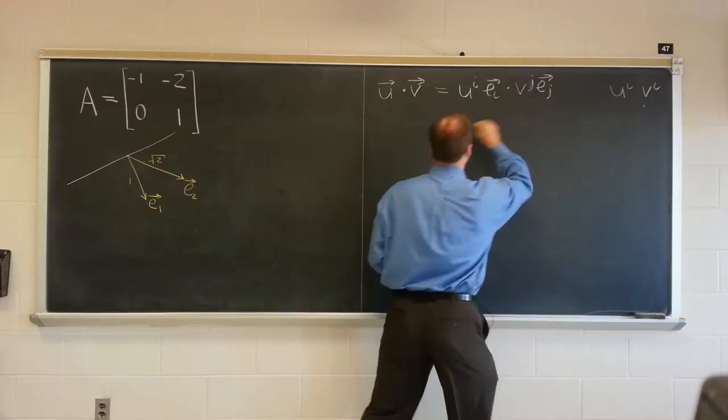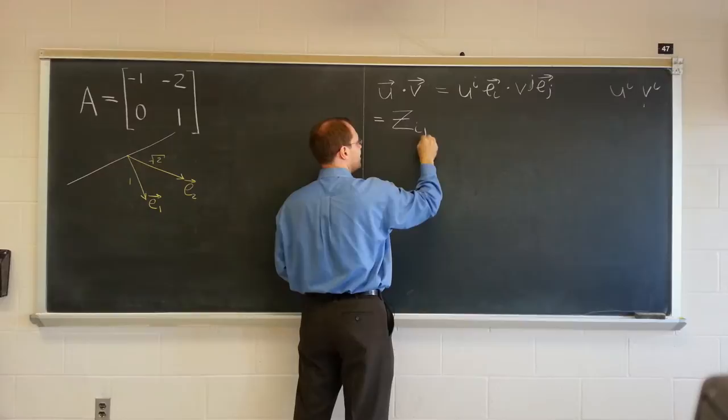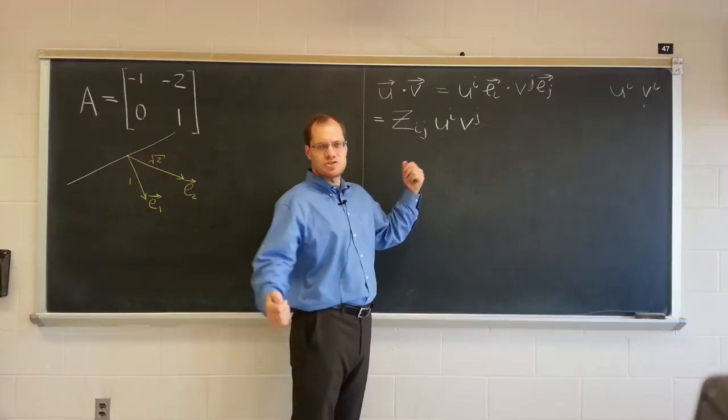Which of course equals, continuing with this chain, ei dotted with ej is of course zij uivj. Something that we've seen so many times but now we just understand, we understood it before, you're just seeing the same thing in linear algebra context.